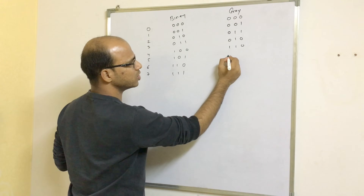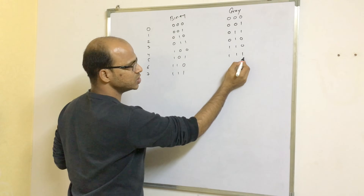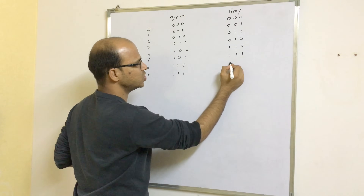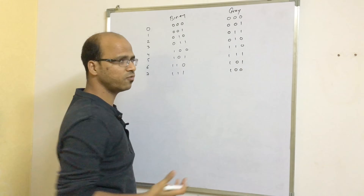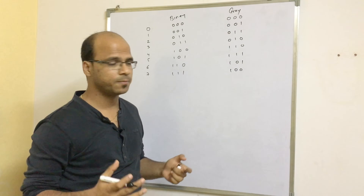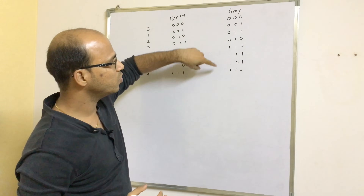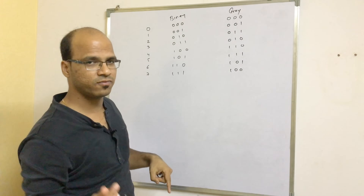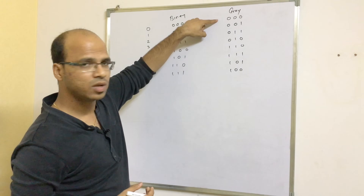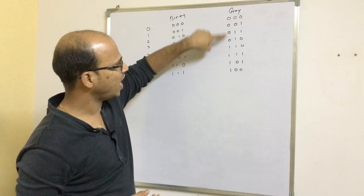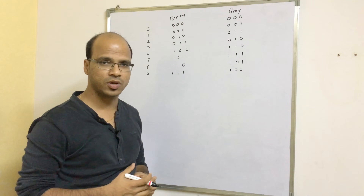Continuing: we can change the last one to get 110, and then change the second-last to get 100. Follow this rule and you'll get all the gray codes. If you compare any two consecutive numbers, you will have only one bit of difference. Even the last and first values have only one bit difference — and that is the advantage of using gray codes.